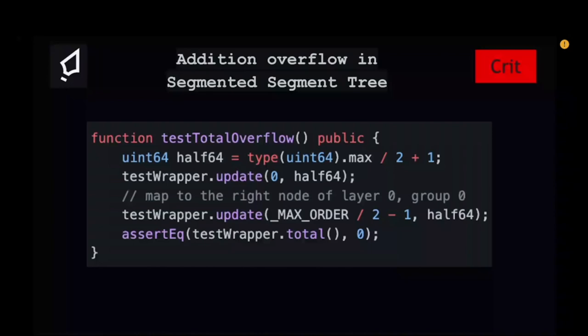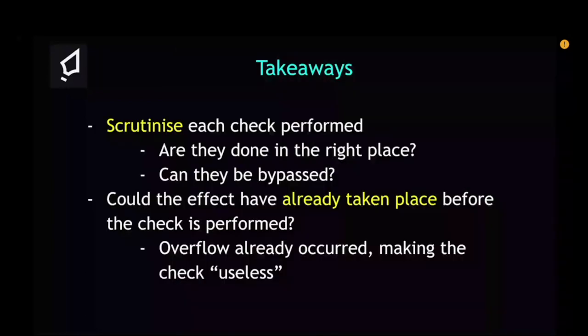You write a test case and produce a POC confirming the total was asserted to equal zero, demonstrating the addition overflow. The key takeaway here is to scrutinize every check that's performed: are they done in the right place, can they be bypassed, and could the effect have already taken place before the check is performed? In this case, the overflow already occurred, making the check redundant.